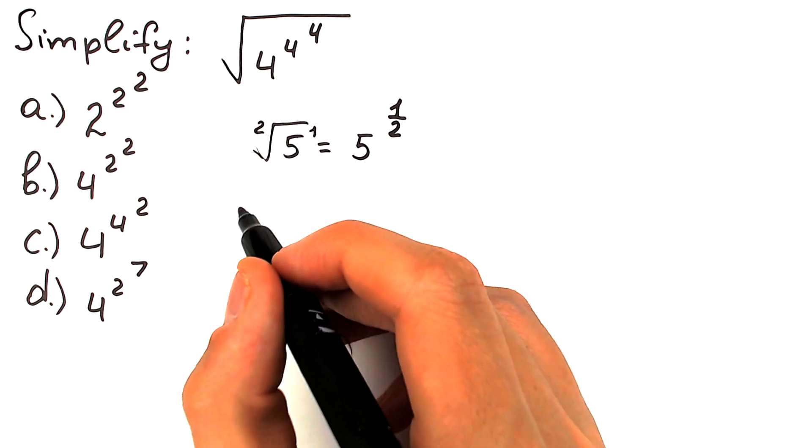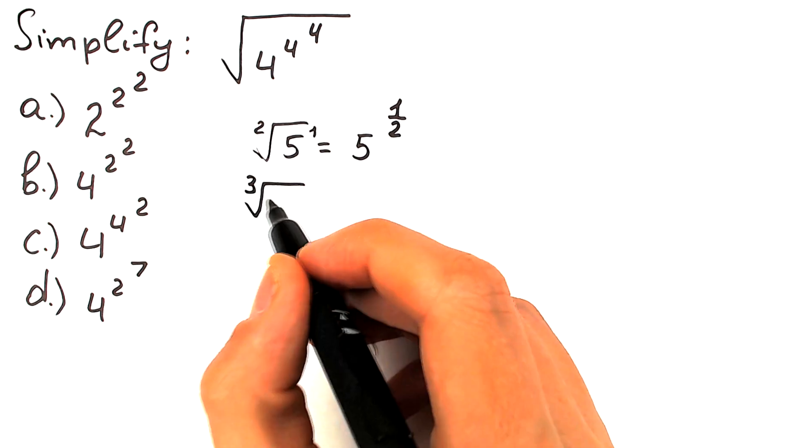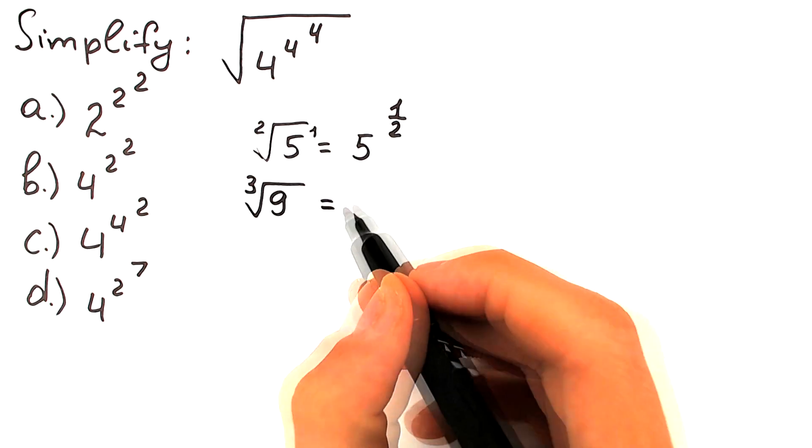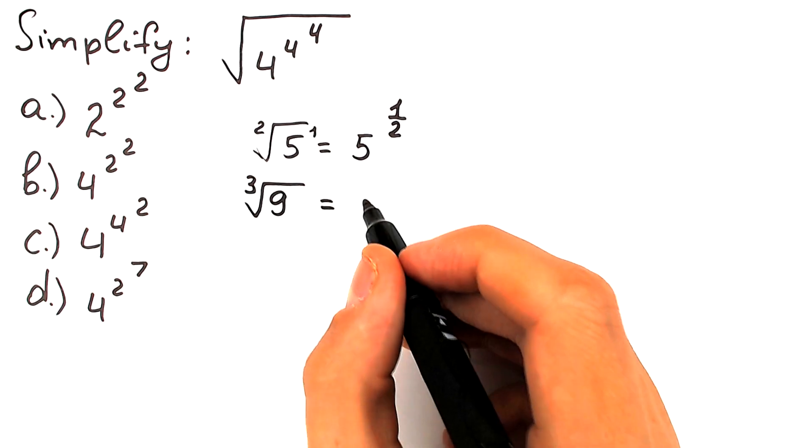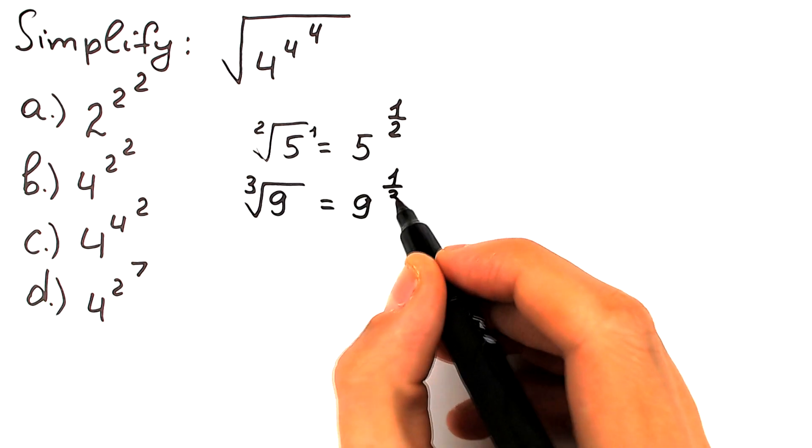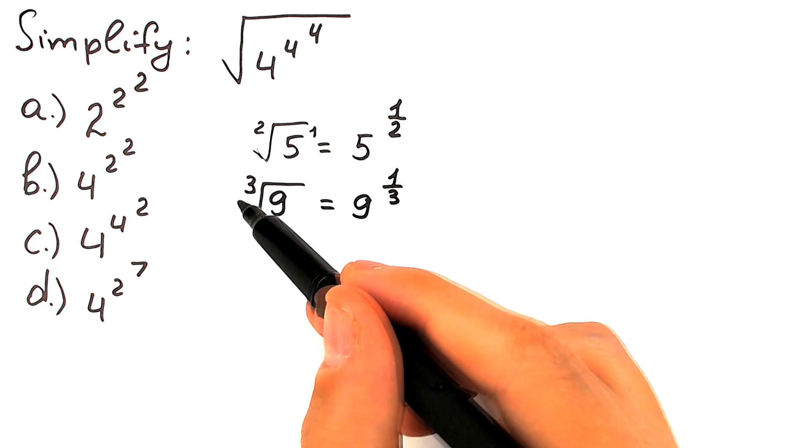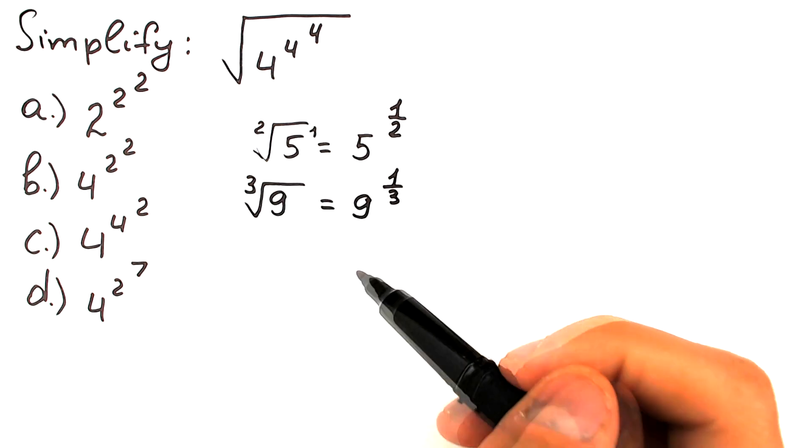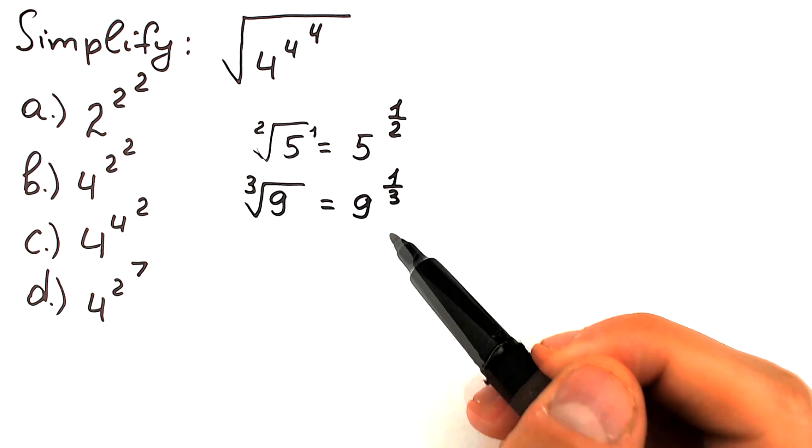Another example, right here we have cube's root, cube's root of 9. So we can easily write it as 9 to the power, right here 1, right here 3. So all the time this power of this root goes to our denominator, so right here 3 goes to our denominator.